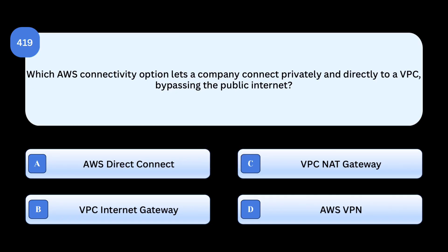Correct answer: AWS Direct Connect. AWS Direct Connect provides dedicated private connectivity from on-premises to AWS VPC. Why others are incorrect: VPC Internet Gateway provides internet access, not private connectivity. VPC NAT Gateway allows private subnets to access the internet. AWS VPN uses the public internet, not private dedicated lines.